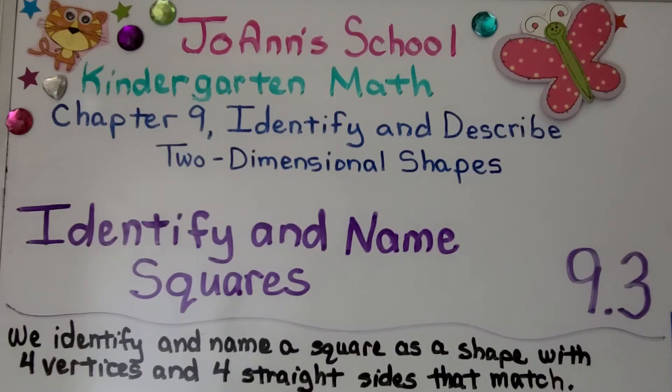Lesson 9.3: Identify and Name Squares. We identify and name a square as a shape with four vertices and four straight sides that match.